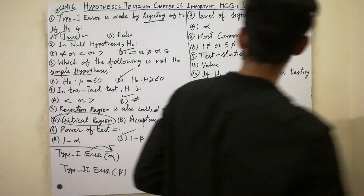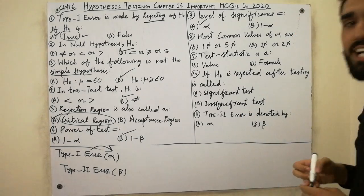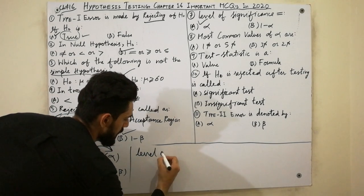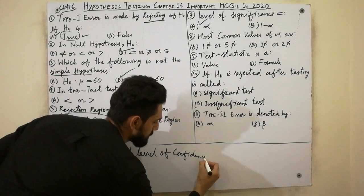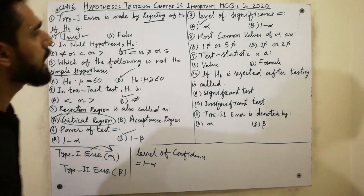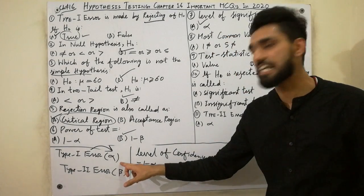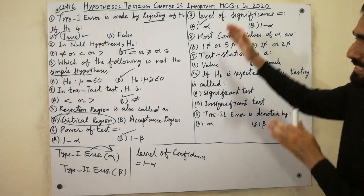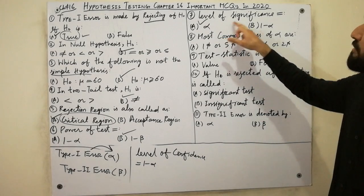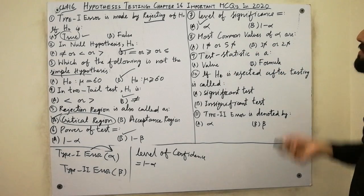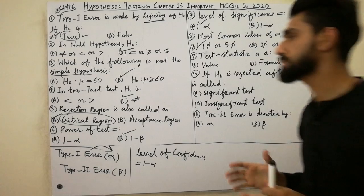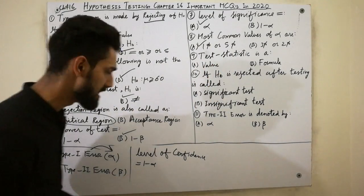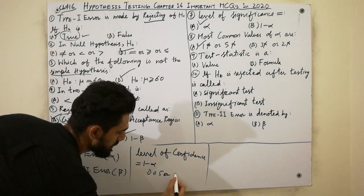Next: level of significance. Level of significance is alpha. Level of confidence is equal to 1 minus alpha. Must remember: Type I error is also called the level of significance, and it is noted by alpha. The most common values of alpha are 1% or 5%, which we write as 0.01 or 0.05. These are the most common values used in testing of means, differences, and proportions.